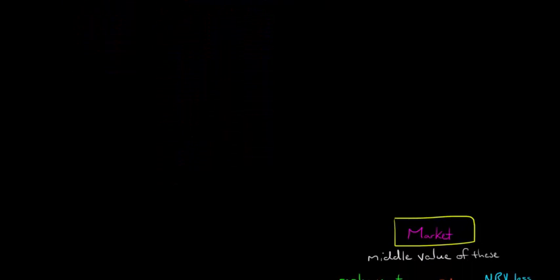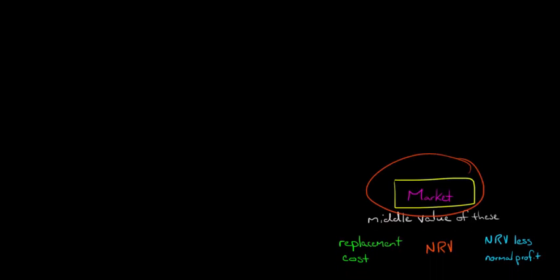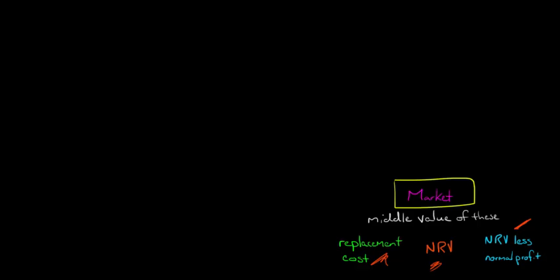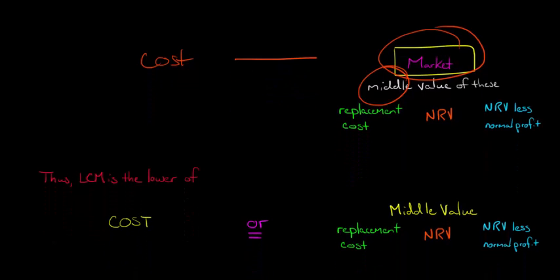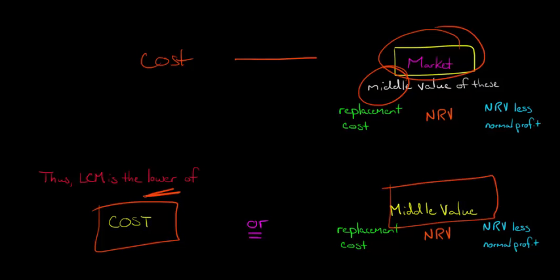So just a quick review — when we talk about market, we obviously need to know what market is if we're talking about the lower of cost or market value. When we think about market value for inventory, we're thinking about the middle value of three things: the replacement cost, the net realizable value of the inventory, and the net realizable value less a normal profit margin. Of those three values, we pick the value in the middle, and that's going to be our market value. Then once we know this market value, we compare it against our cost value and pick the lower of those two to be our inventory value.